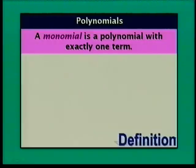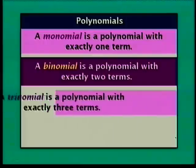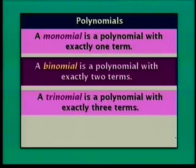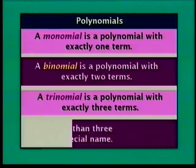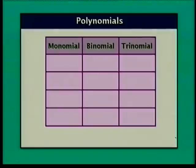A monomial is a polynomial with exactly one term. A binomial is a polynomial with exactly two terms — you can think of a bicycle with two tires. A trinomial is a polynomial with exactly three terms — you can think of a tricycle, which has three tires. A polynomial with more than three terms doesn't have a special name.